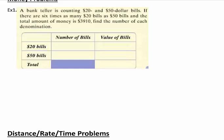When we're setting up a chart for money, we will always have what are our bills or coins on the left-hand side. We're going to have a column of the number of bills, and then the value of the bills, which is where we multiply. Because if I told you you had 20 nickels, you would multiply 20 times 0.05 to figure out how much money you have. Same thing applies here. We're going to multiply across.